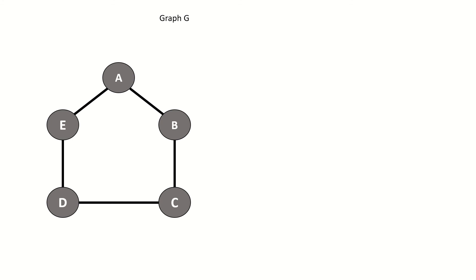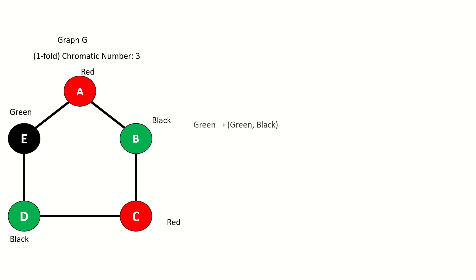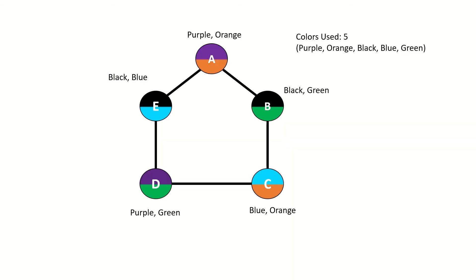As an example, see this graph. It has chromatic number three. Now suppose we want to two-fold color it. Just replace every color in the graph with a set of two unique colors, and the result will still be a proper coloring, as long as the initial one-fold coloring was a proper coloring. The total colors used in this case is six, which is indeed less than or equal to two times the chromatic number of the original graph, which is three. Note that we can two-fold color this graph with fewer than six total colors — it's possible to use as few as five total colors and still properly two-fold color it. For this graph then, the two-fold chromatic number is five, as that is the minimum number of colors we need to two-fold color it.